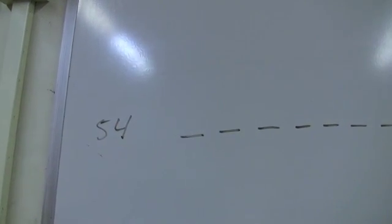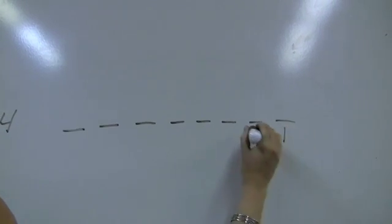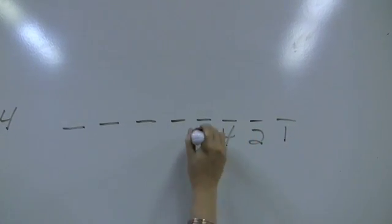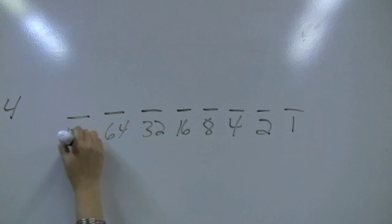And I want to write the number 54 in binary. So starting over from the right, I will put the number 1, 2, 4, 8, 16, 32, 64, 128.